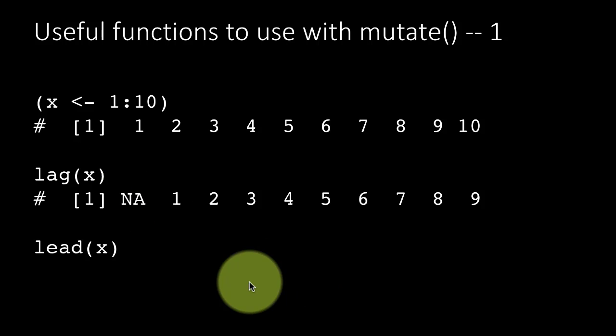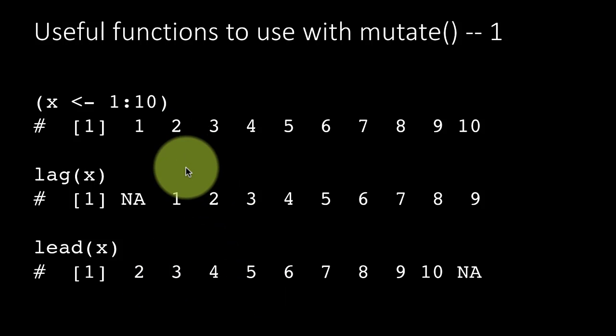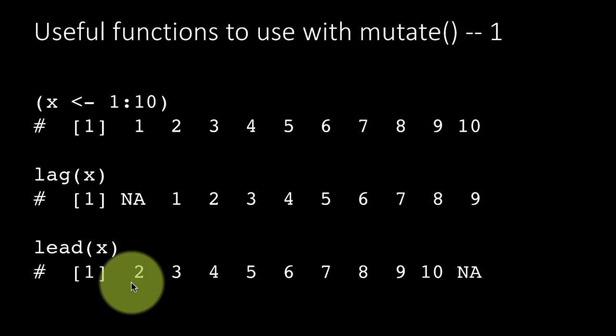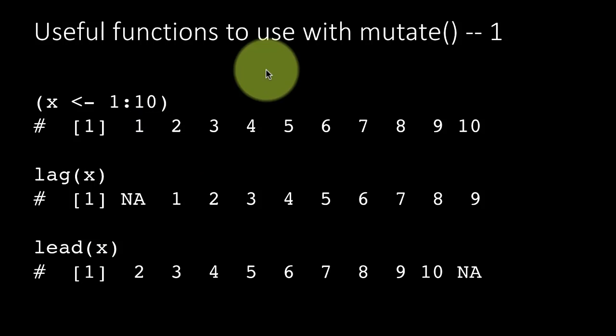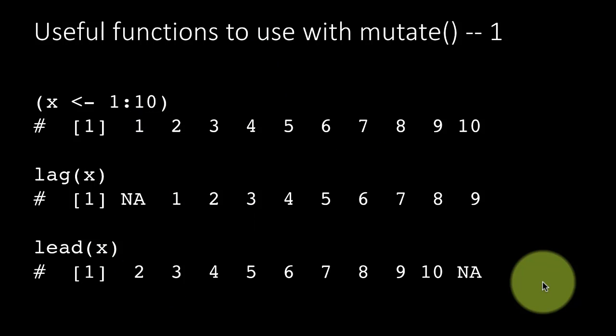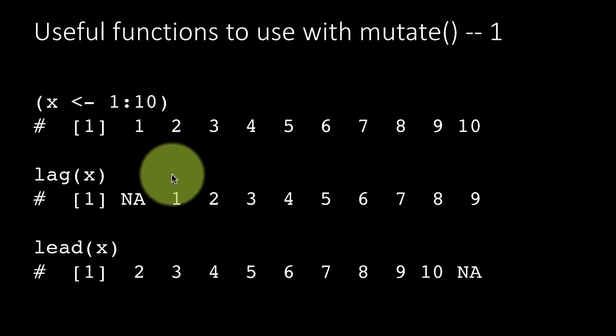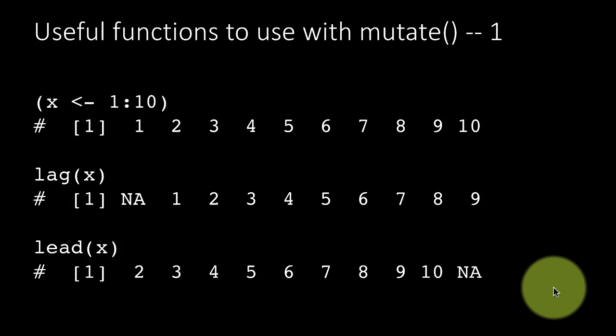Lead of x again is just the opposite of lag. So obviously, you'll get the data from the time period one time period forward, not backward. So which is why the last value is NA and the first value is 2. Because in the first point, you're going to get the value which is in the second time period of x, which is 2, 3, etc. So these are some useful functions lag and lead when operating with time series.